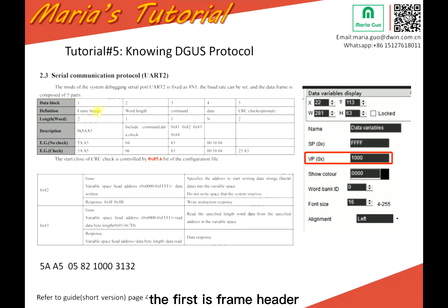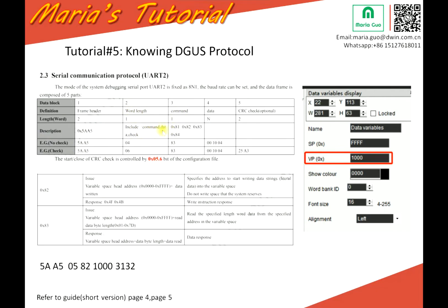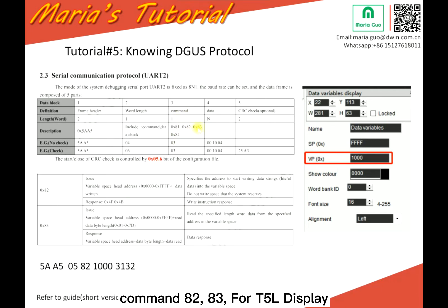The first is the frame header. So for the DGUS UART2 protocol, the frame header is 0x5A A5. And then is the word length, which includes command, data, and check. And then this is the command — 0x82 and 0x83 for the LCD display.